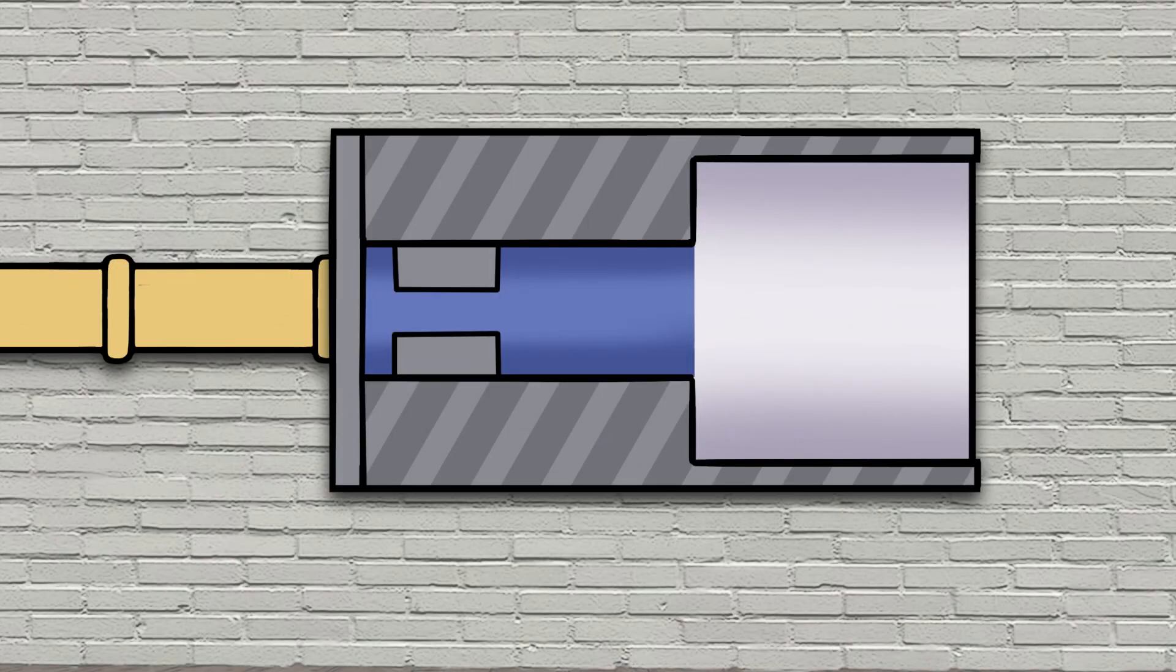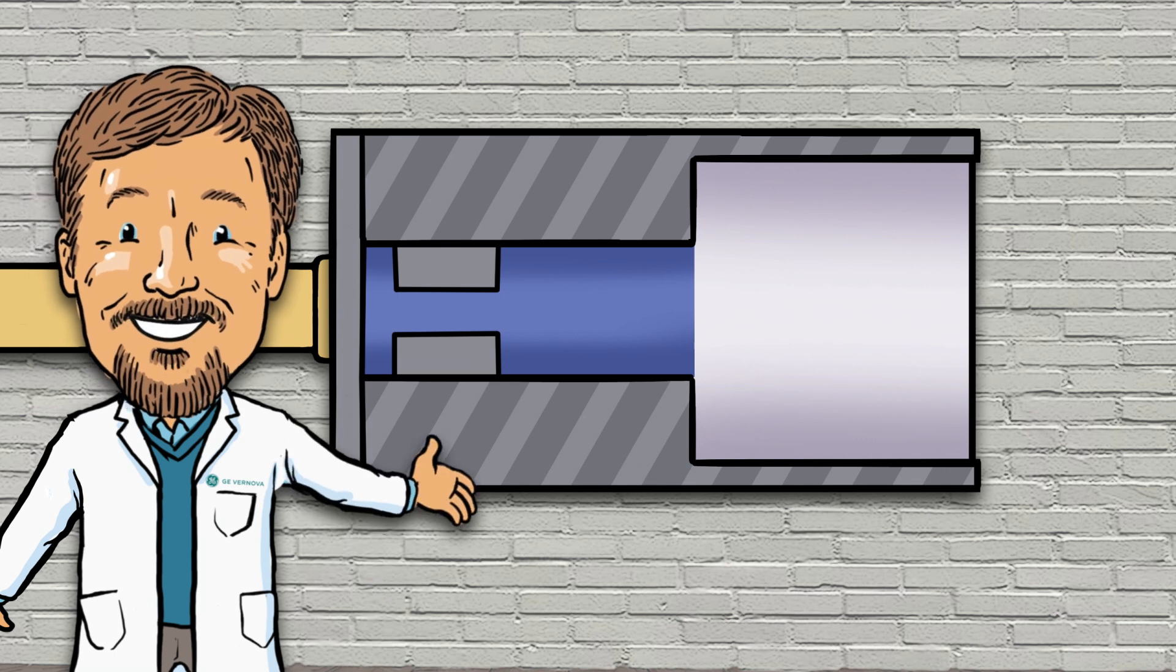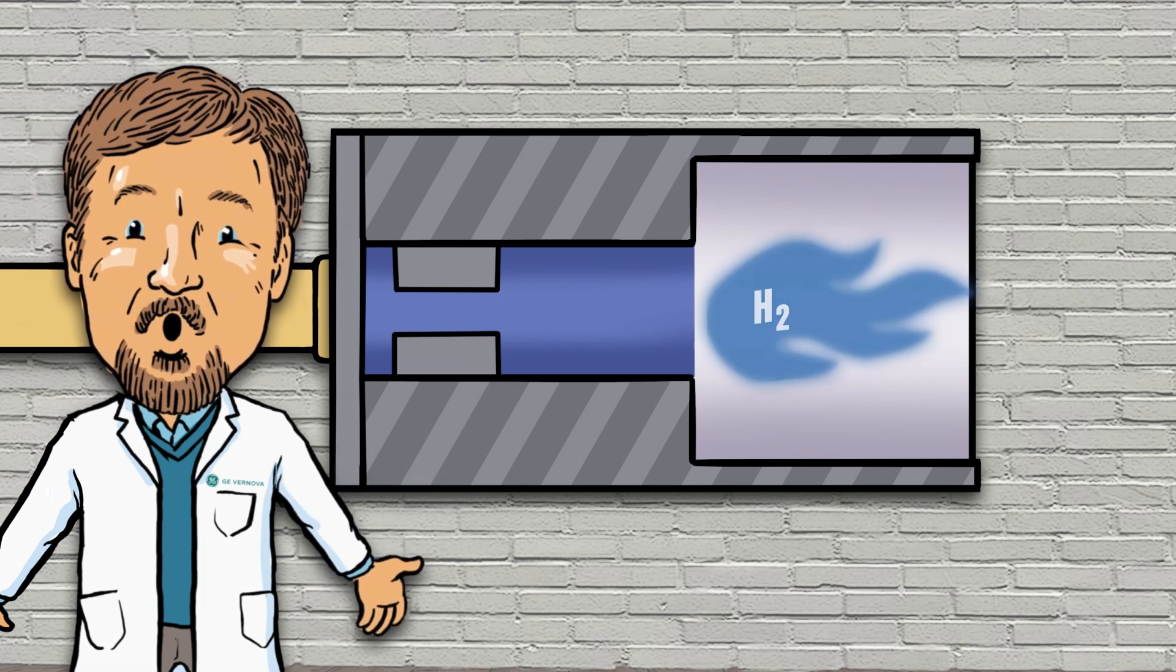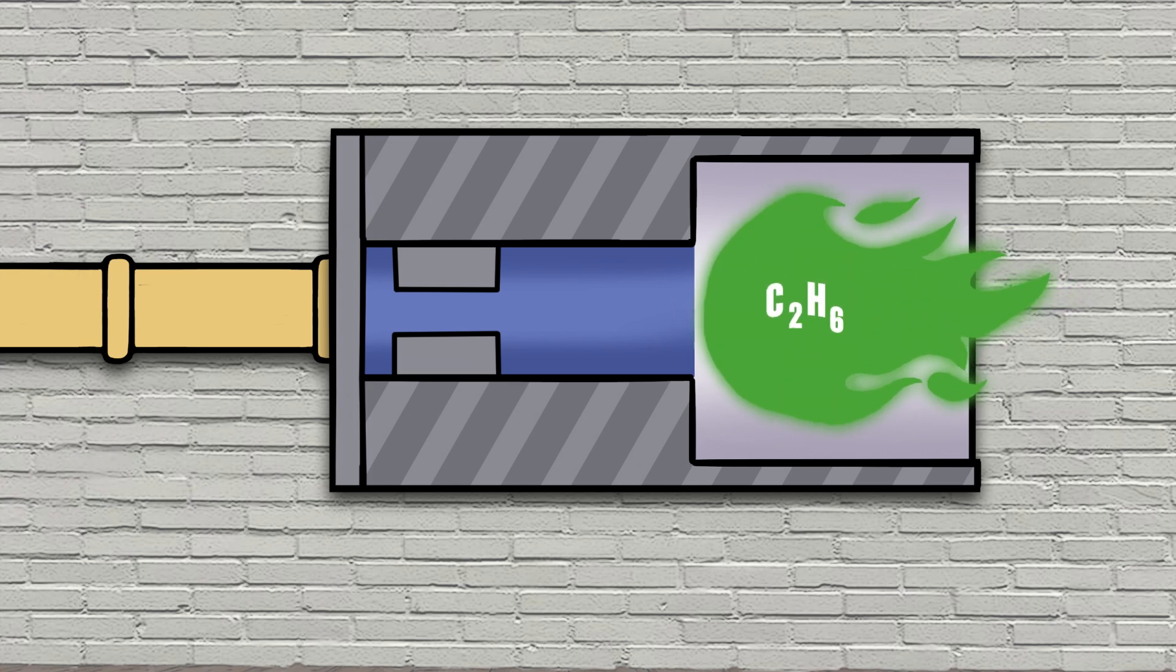And what comes out of the lab? The DLN 2.6E combustion system, which has the capability to burn fuel blends up to 50% hydrogen. And we've applied this combustion system to the 7HA and 9HA gas turbines.